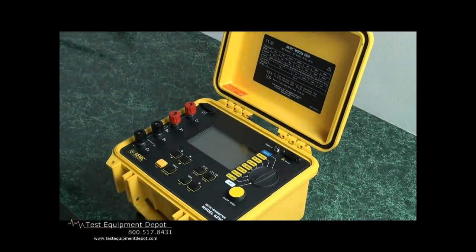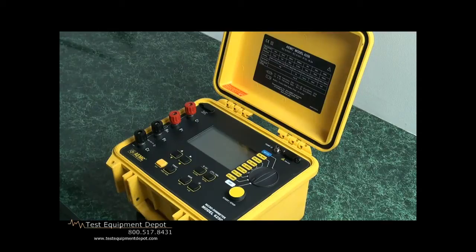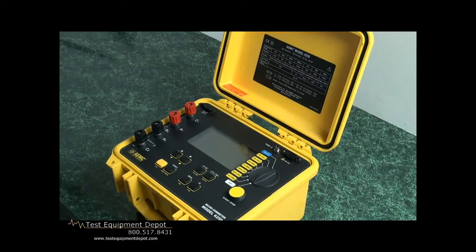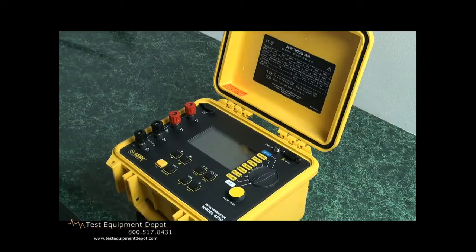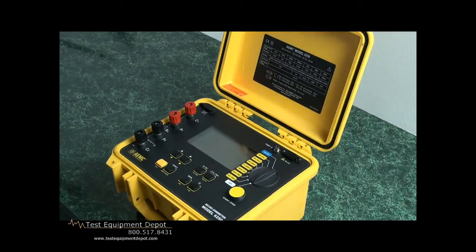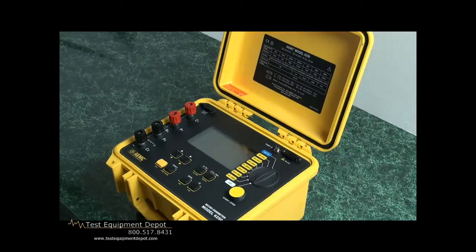The AEMC Model 6250 micro ohmmeter is unique in that it can measure out to 0.1 micro ohm. That is extremely sensitive and probably perhaps the best in the industry. It can measure up to 2,500 ohms, so it does have a broad range, although normally we'll be measuring down into the very low ohm resistance.